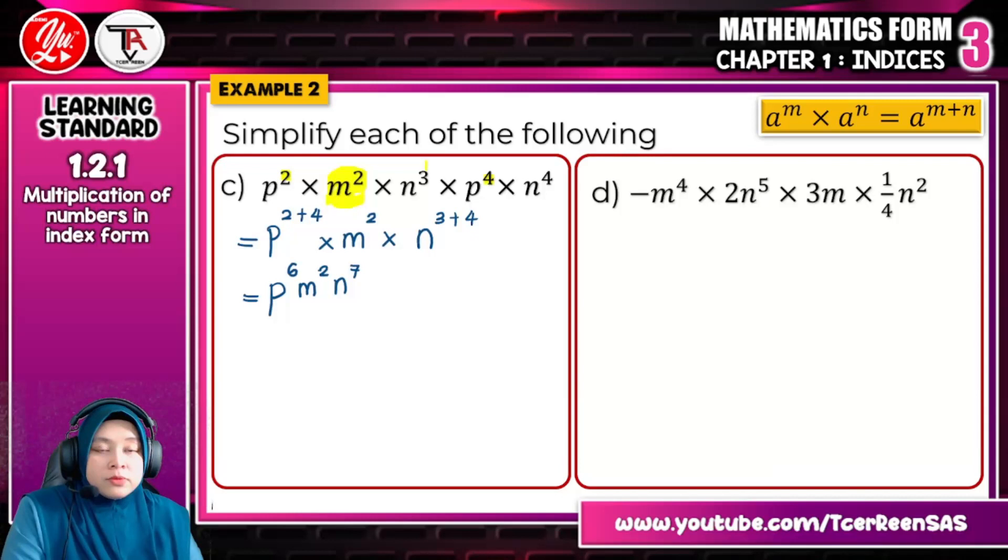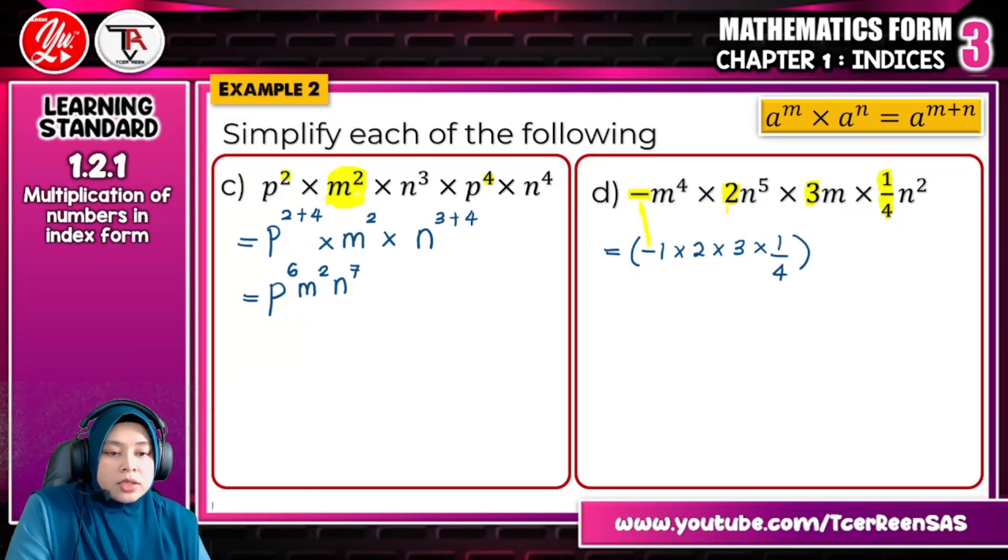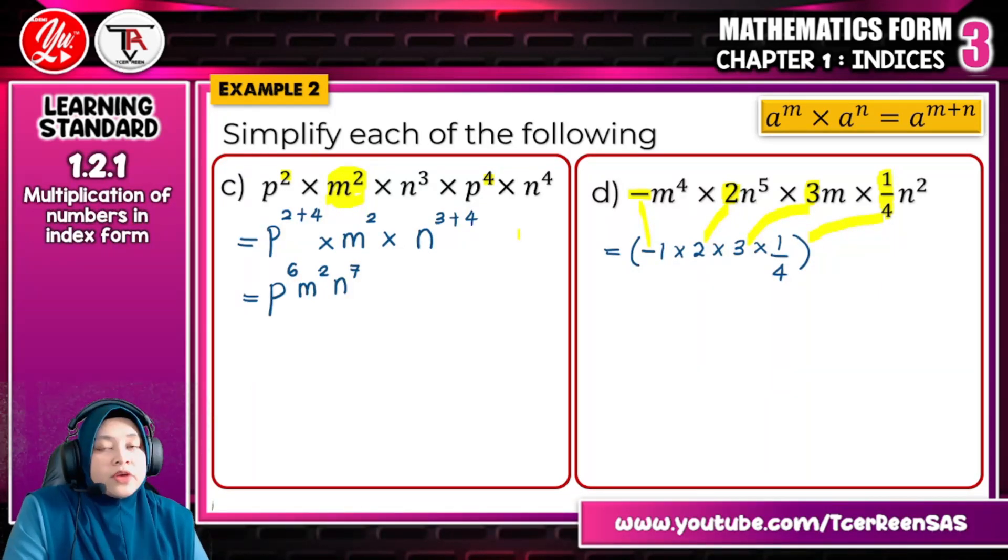Question D, it combines all with the coefficient and so on. Here I highlight to you the coefficient first, which is negative. Negative means negative 1, and here negative means negative 1. Times 2, I just write the coefficient first. I hope you can see. Negative, and then 2, and then 3, and then 1 over 4. And then you take m first. Please remember all the coefficient, you just combine it together. And then after that, you take the bases based on the same base only.